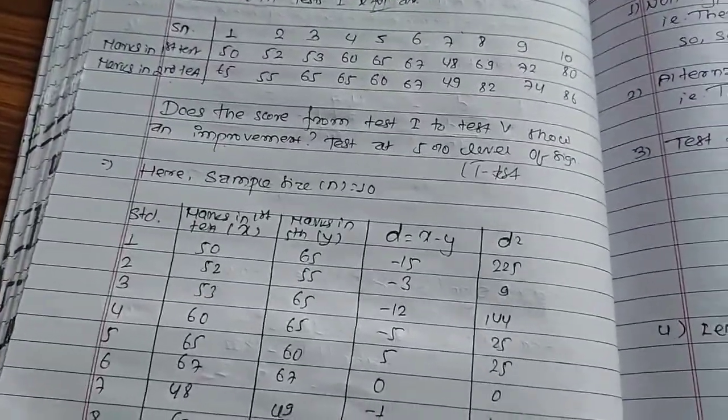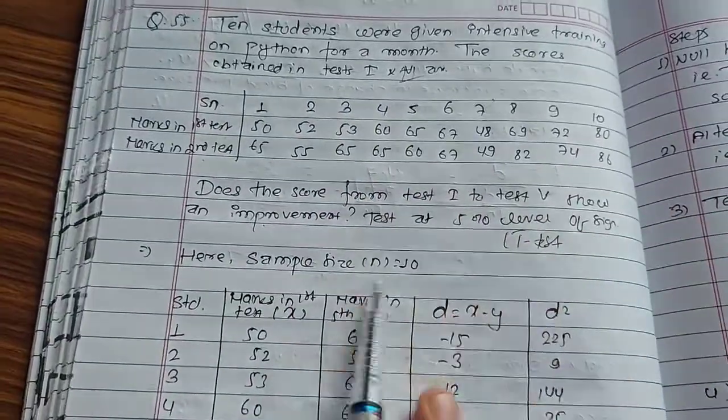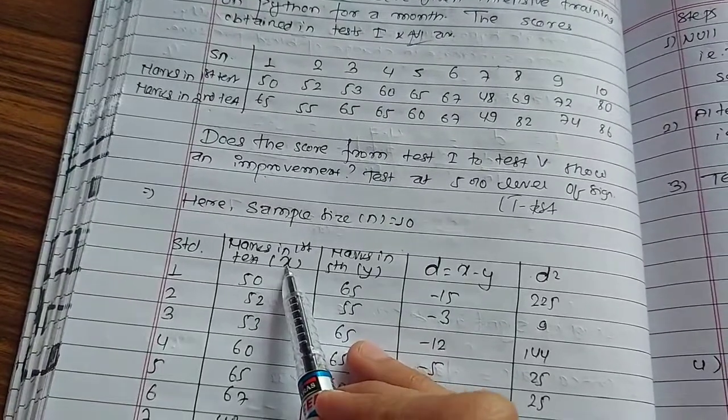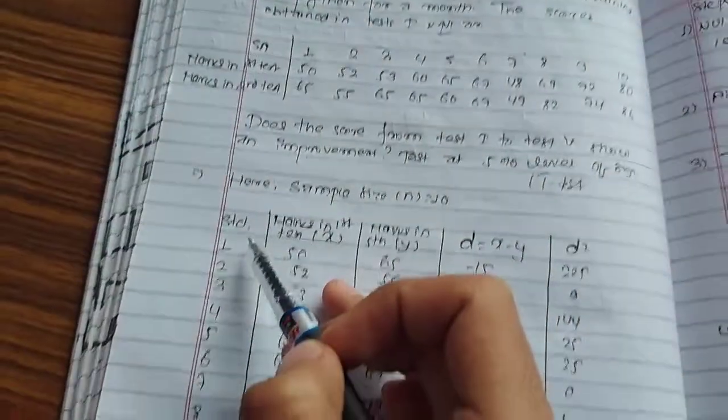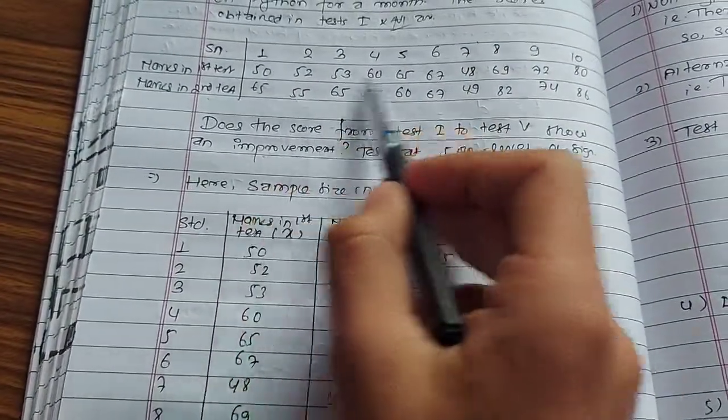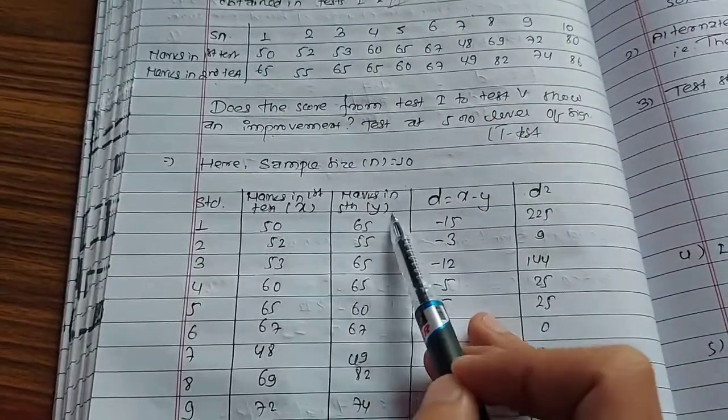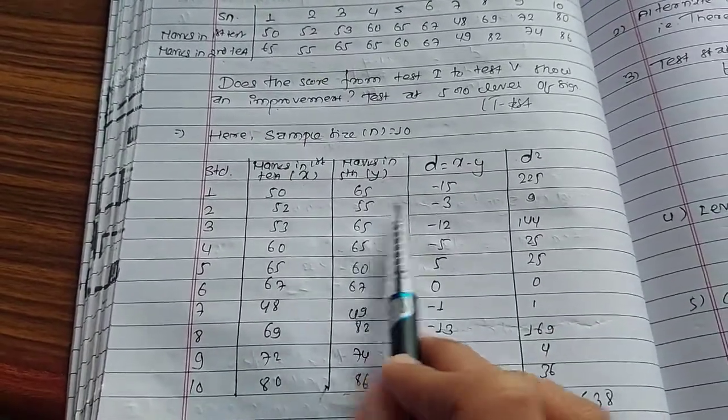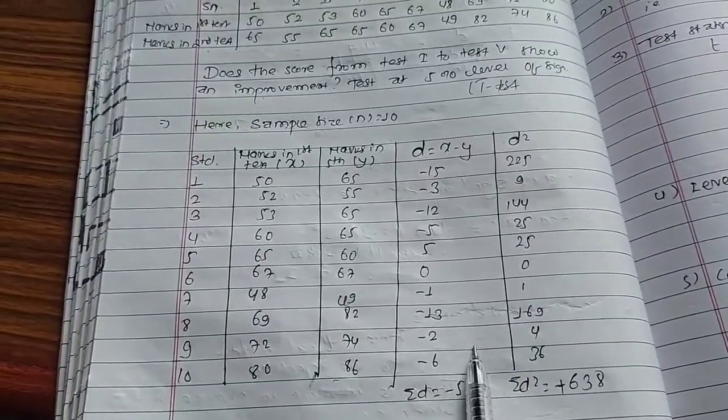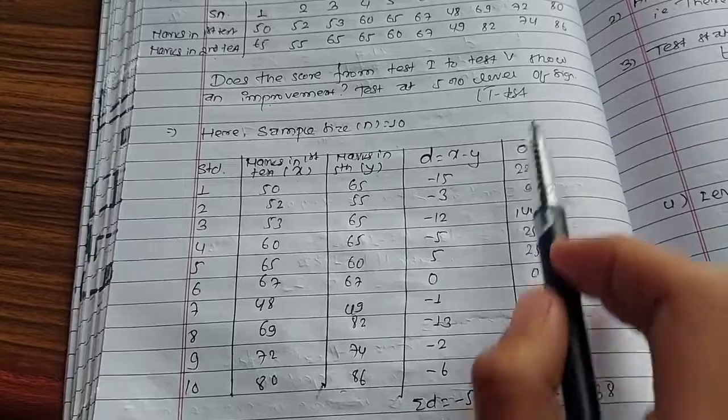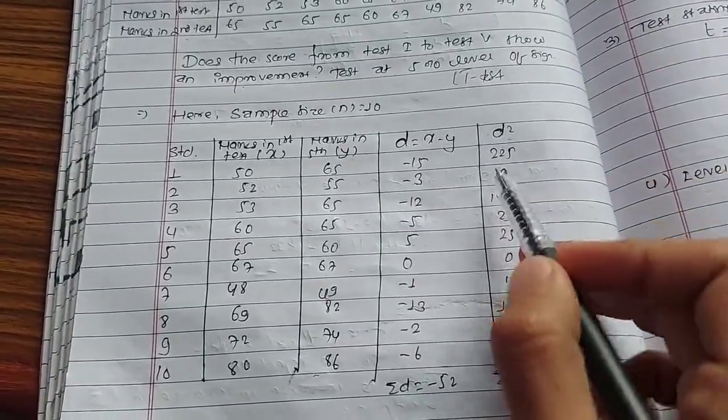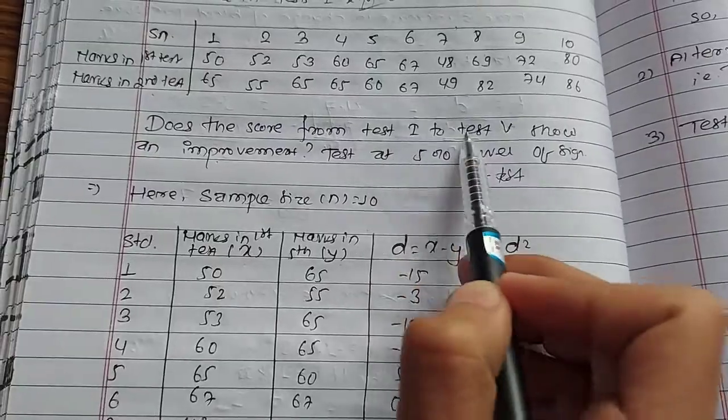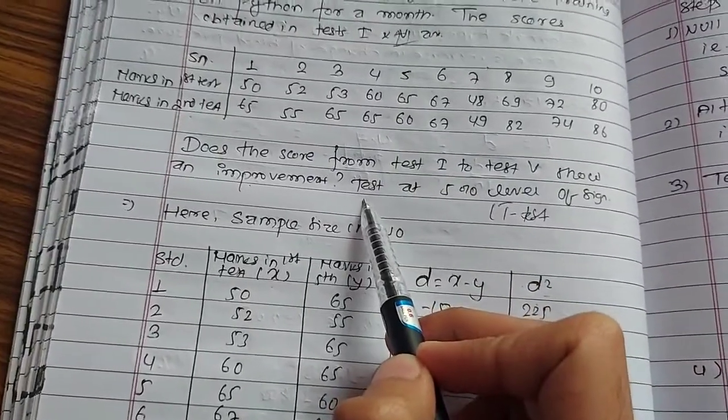Sample size n is 10. Test before Python program is X, test after Python program is Y. d equals X minus Y. 50 minus 52 equals minus 2. Calculate d values. d squared values are 225, 9, etc. Total summation d squared equals 638.